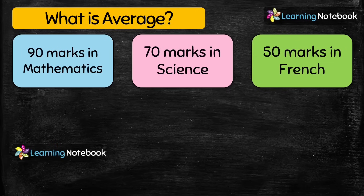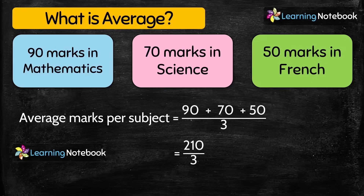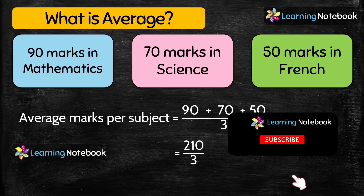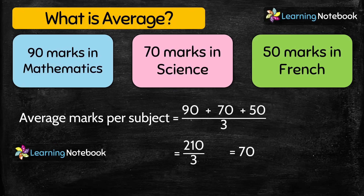Now he has got the result of his third subject, French, and he has secured 50 marks in French. Again he wants to know his average per subject. So this time we are going to add the marks of all 3 subjects and divide by 3. We will do 90 plus 70 plus 50 divided by 3. After adding the marks we get 210 divided by 3, which equals 70. Did you notice that the average marks per subject have now changed to 70?